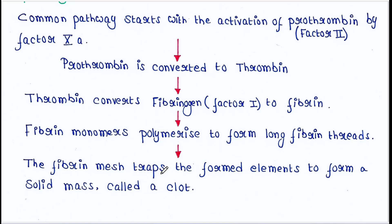Fibrin monomers polymerize to form long fibrin threads. The fibrin mesh traps the formed elements — different blood cells such as RBC, WBC, etc. — to form a solid mass that is called a clot. In this way the clot gets formed.